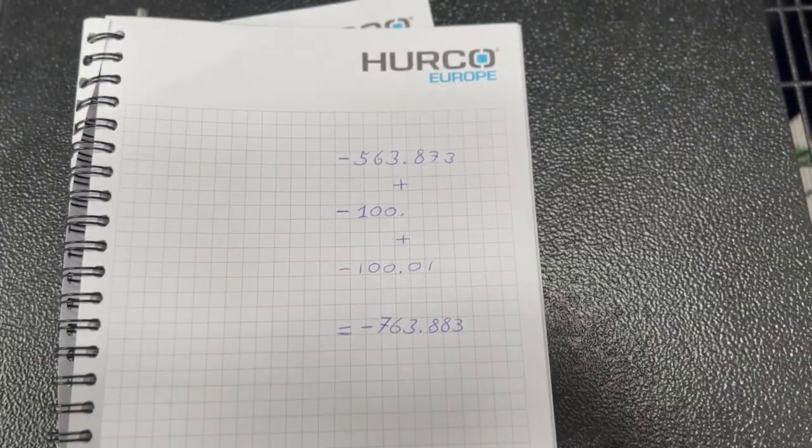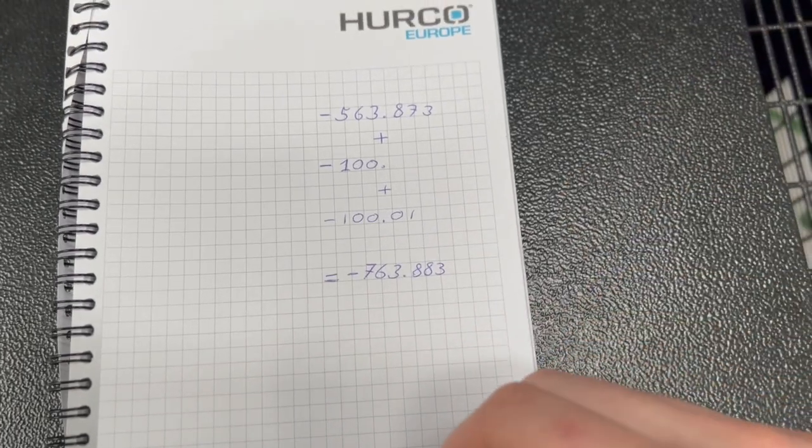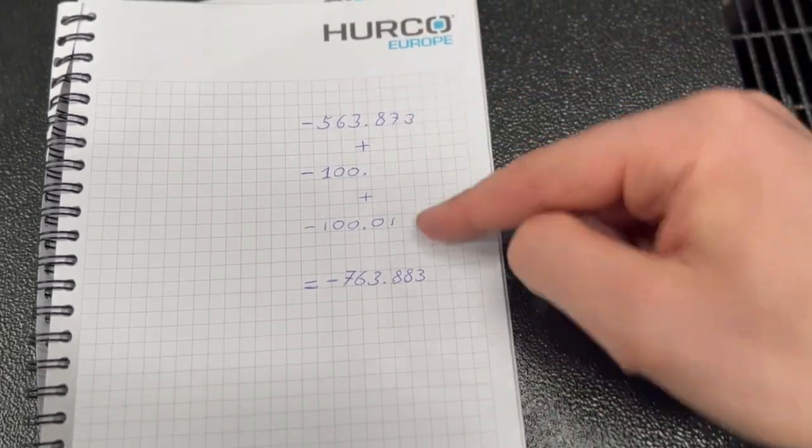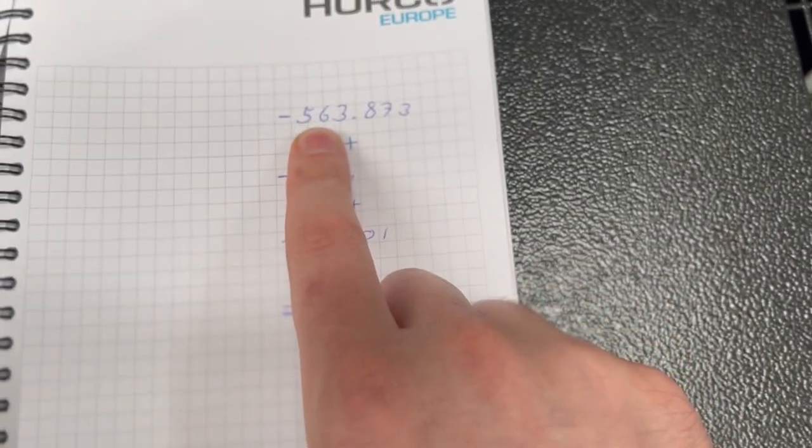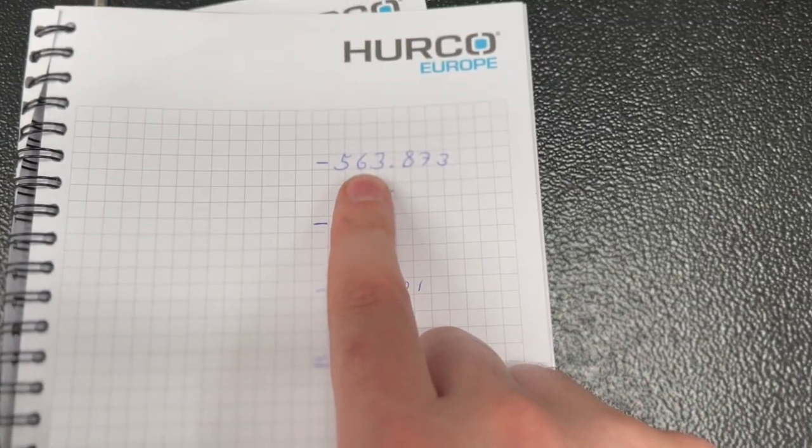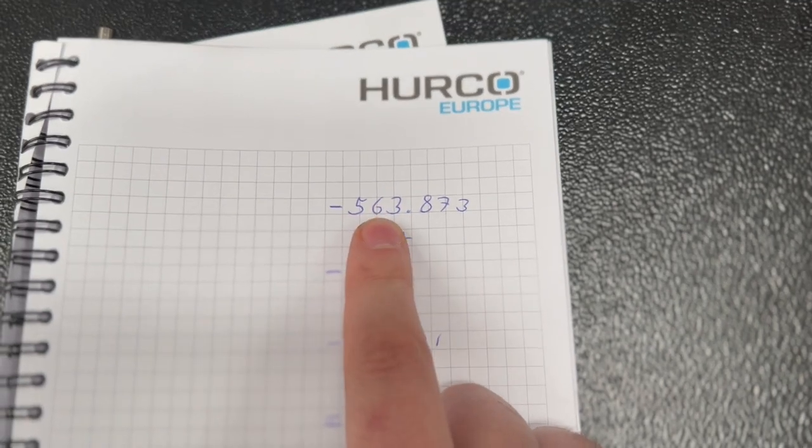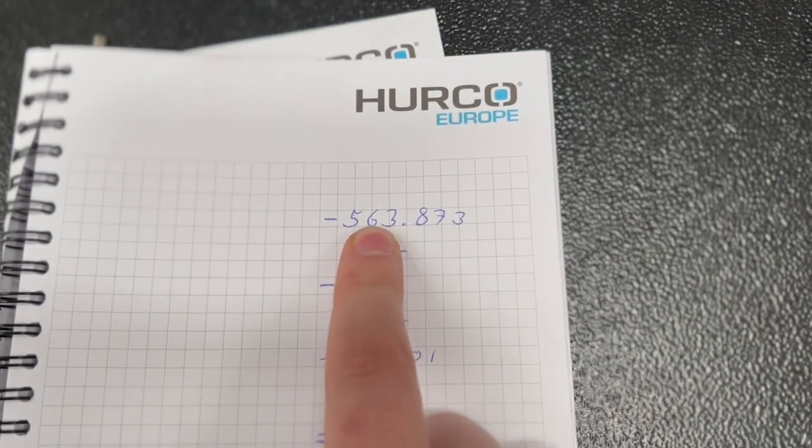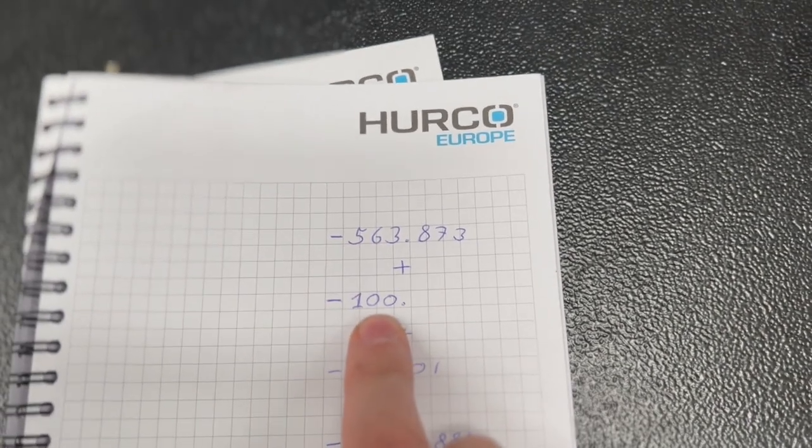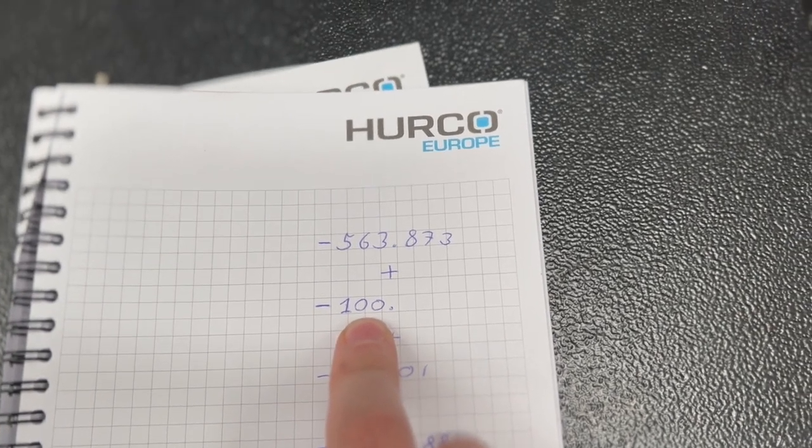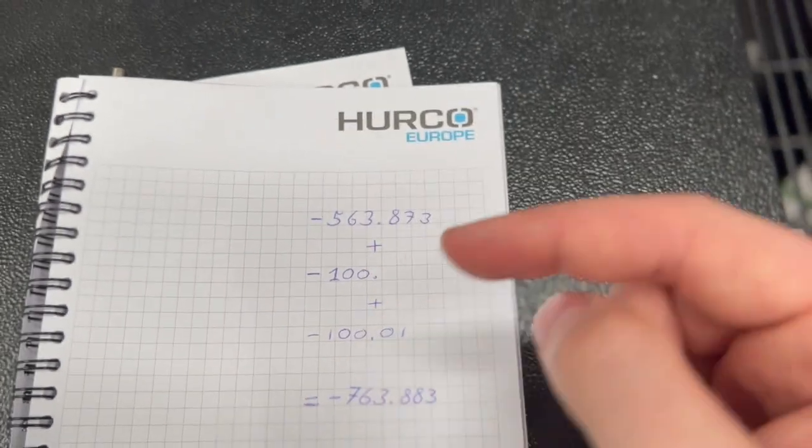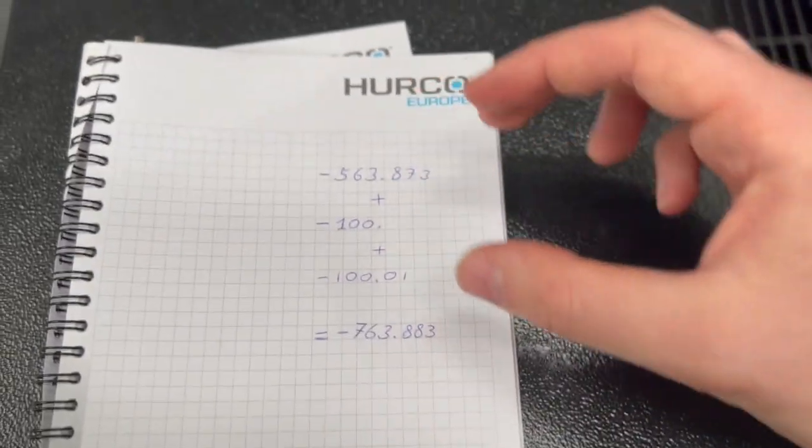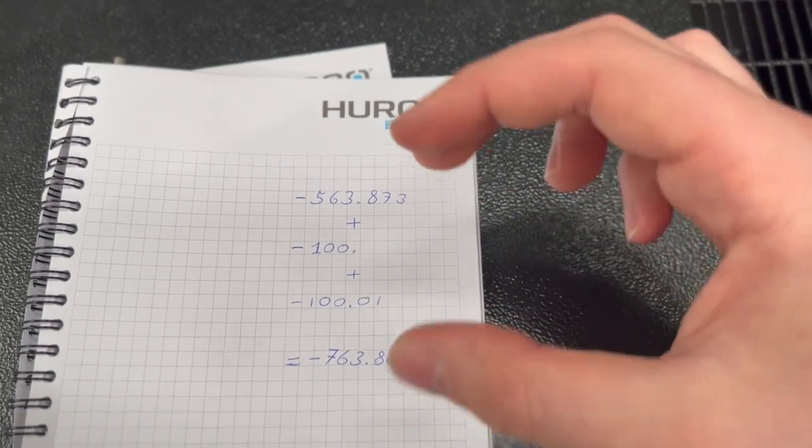And if you're a little bit unsure about using the calculator on the Hurcos you can just write these figures out and add them together on paper. So we have our Z reference figure which is our figure we've got by putting our mandrel or our tool of a known length down onto our slip. Then you add on our slip which is 100 mil which would take that to minus 663. Again you're adding but you're going in the minus direction so you're always going to end up with a bigger minus figure.